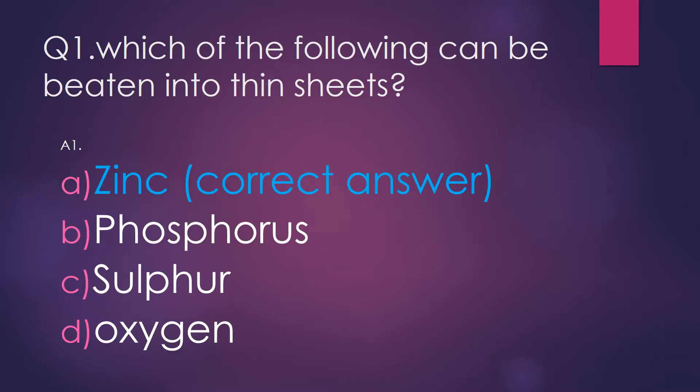Question number 1: Which of the following can be beaten into thin sheets? The options are zinc, phosphorus, sulfur, and oxygen. The correct answer is zinc because zinc is a metal and it can be beaten into thin sheets, whereas the rest of the three are non-metals.